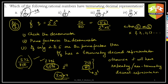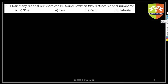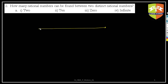The next question asks: how many rational numbers can be found between two distinct rational numbers? Between any two distinct rational numbers a and b on the real line, there are infinitely many rational numbers. So the answer is option 4 — infinitely many.